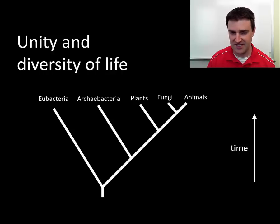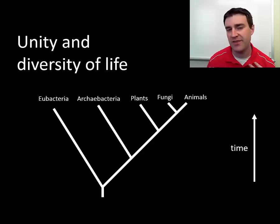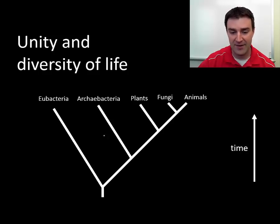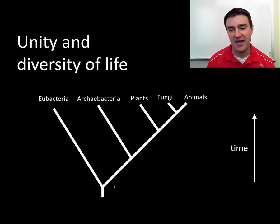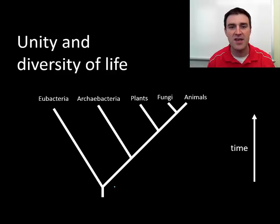We're going to talk more about tree of life diagrams later. Essentially, we're arguing that all organisms have many things in common and so have a common ancestor at the beginning of the tree of life. As time progressed, they went down different evolutionary paths.